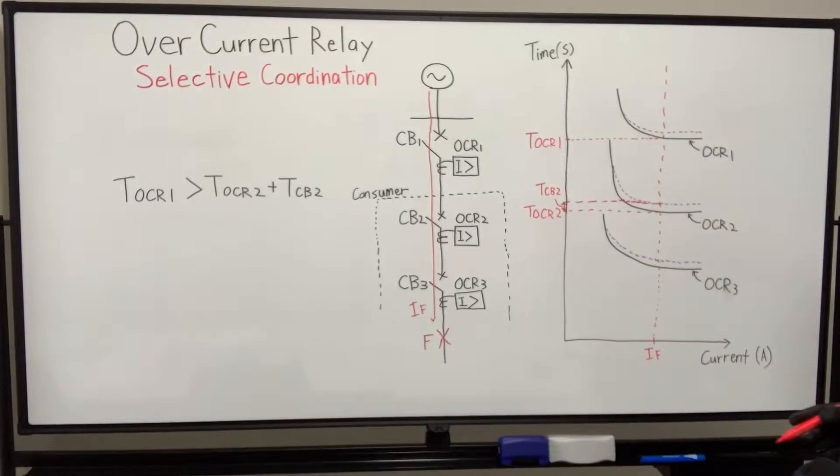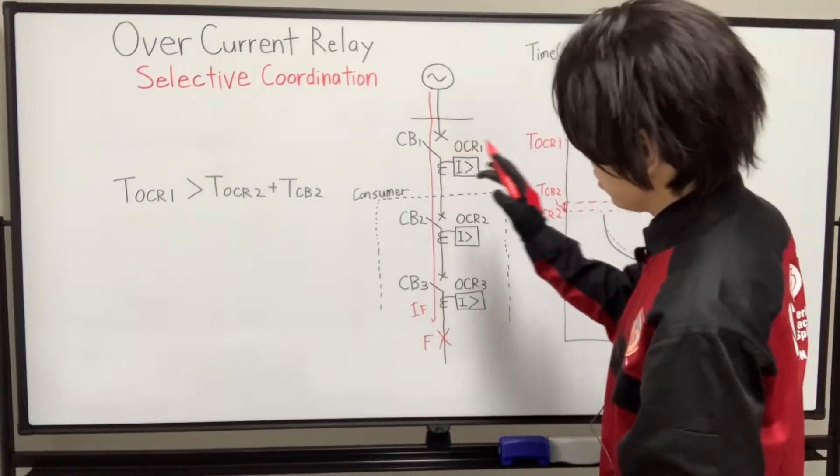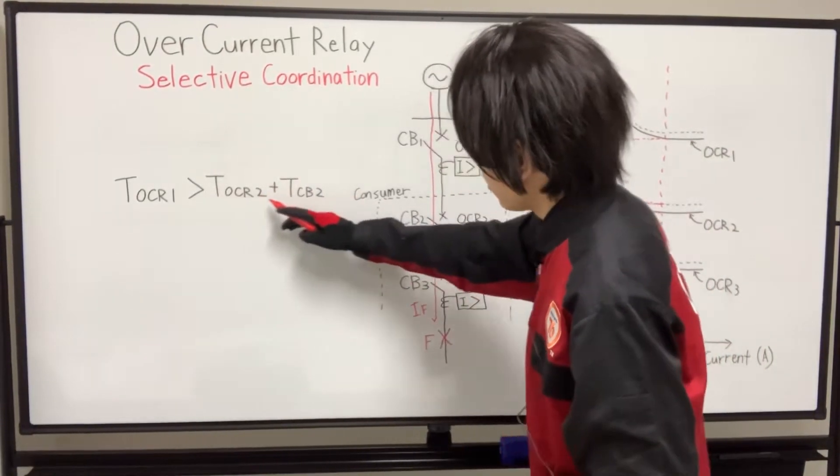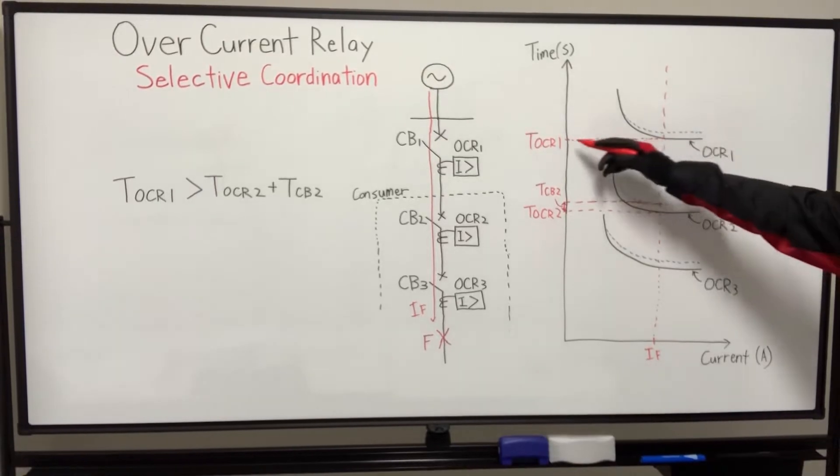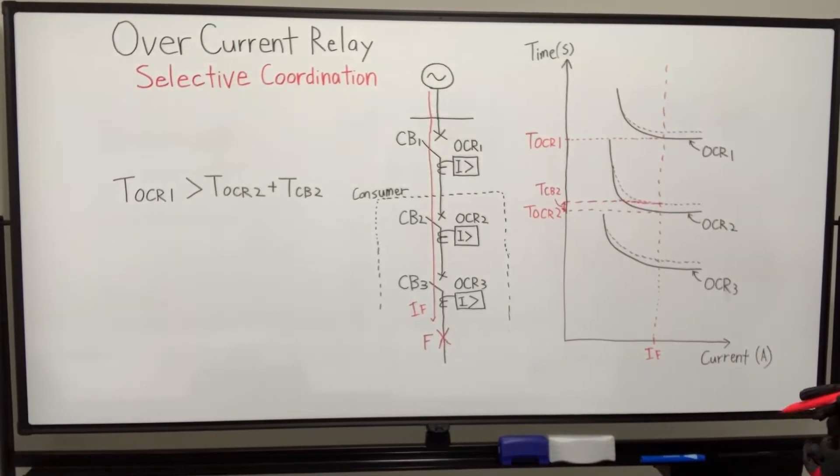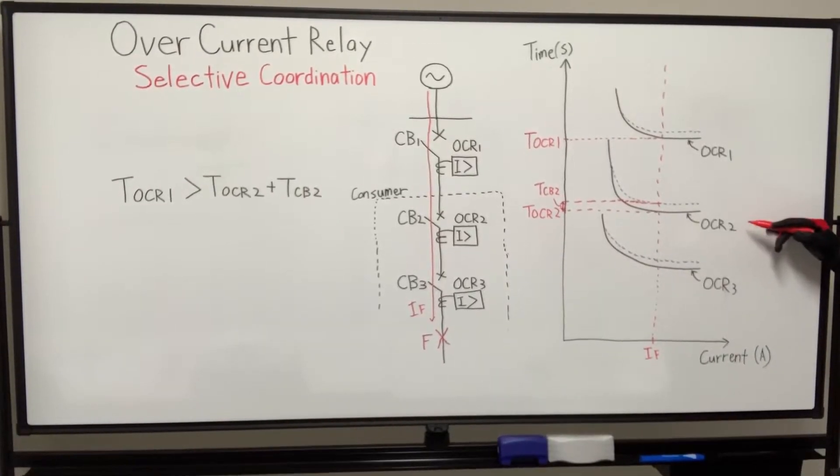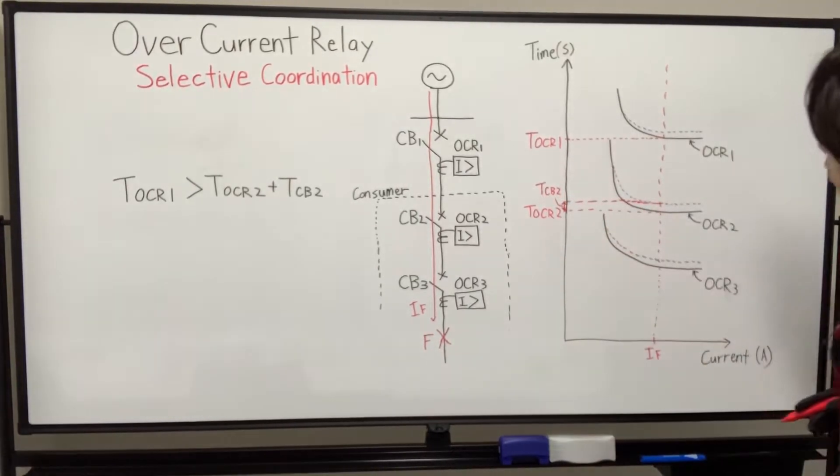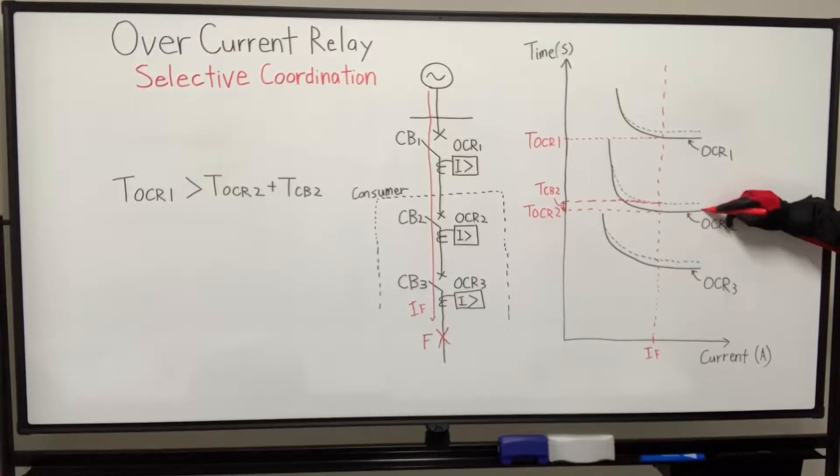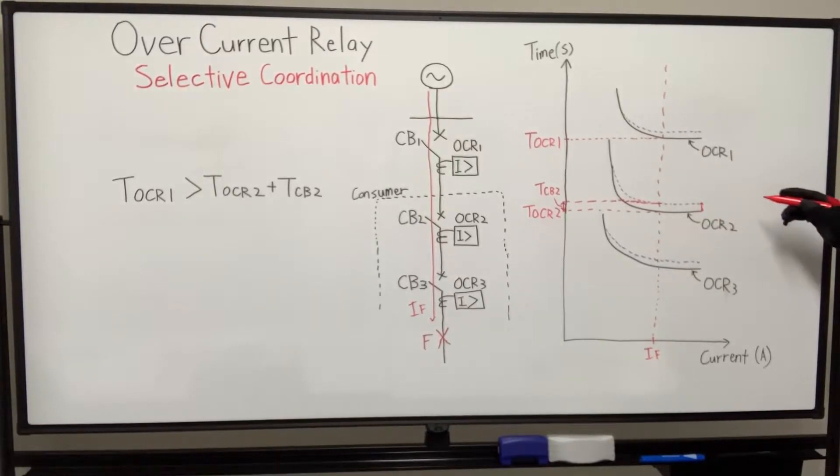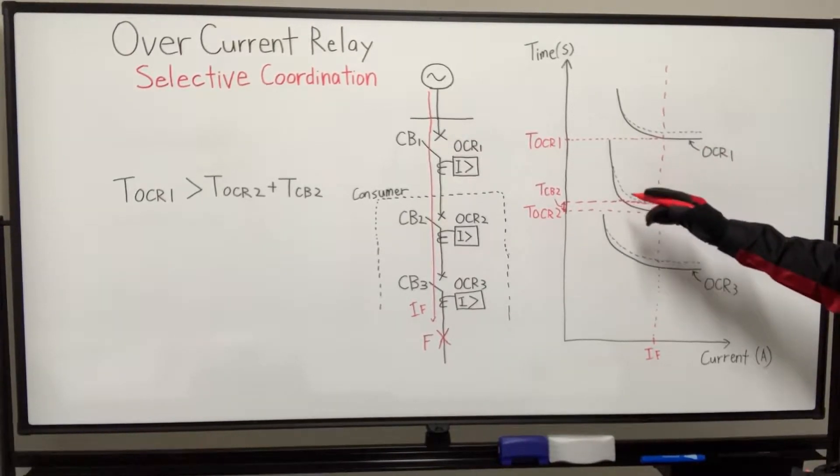Also, this state is expressed by this equation. Here, TOCR1 means the operating time of overcurrent relay 1, so here. And TOCR2 means similarly the operating time of overcurrent relay 2. TCB2 means the interrupting time of circuit breaker 2. Okay, so generally the circuit breaker interrupting operation takes time. So this gap represents the interrupting time delay of the circuit breaker.